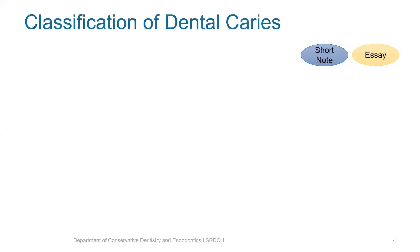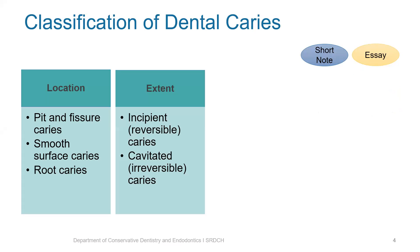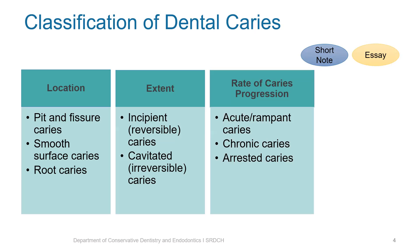Caries can be classified in different ways. Based upon location, it can be classified into pit and fissure caries, smooth surface caries, and root caries. Based upon the extent of caries, it can be incipient caries which is not cavitated and hence is considered reversible, or cavitated and irreversible caries.